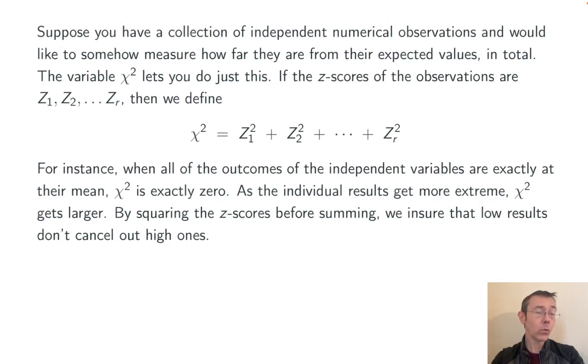The idea behind squaring all of these z-scores is to ensure that the low results that you've gotten don't somehow cancel out or balance out with the high results. Remember, a z-score is supposed to measure how far an individual observation is from an expected value, either in the positive or negative direction.